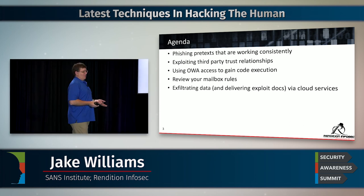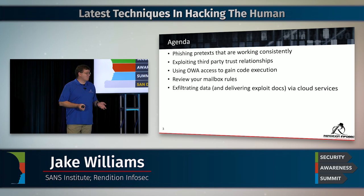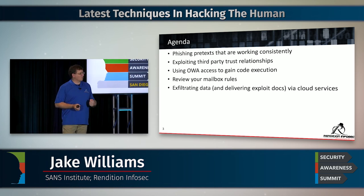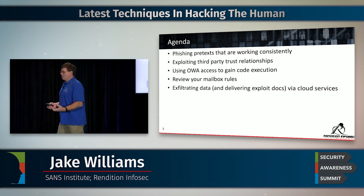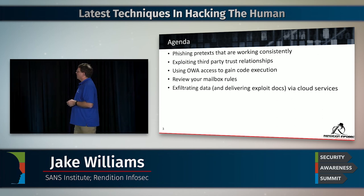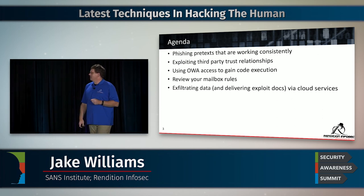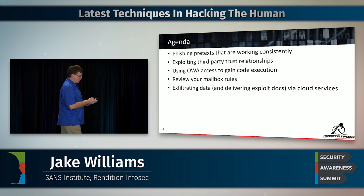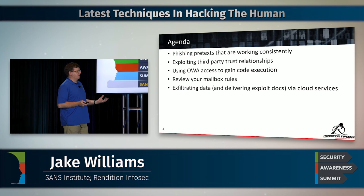A lot of security awareness people don't know about this, and I'm finding out a lot of pen testers and incident response people don't know about it either. When we suggest they came in through Outlook rules, people say, 'They got code execution from Outlook rules?' And the answer is yes. I want to walk you through how that happens, and also talk about exploiting data and delivering exploit documents through cloud synchronization services — a real game changer for attackers over the last couple of years.